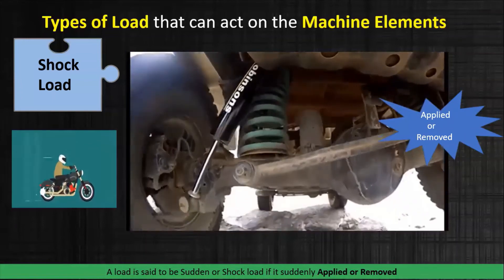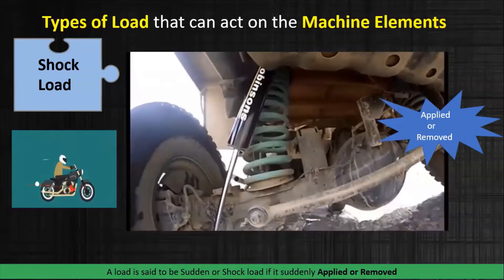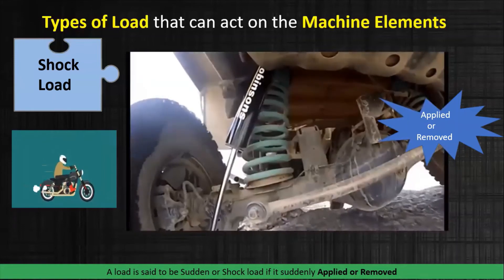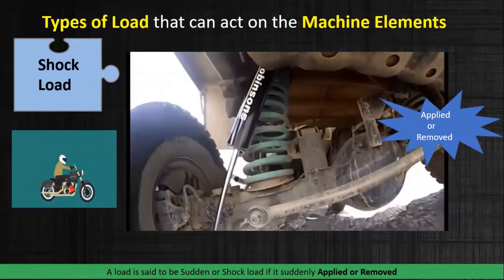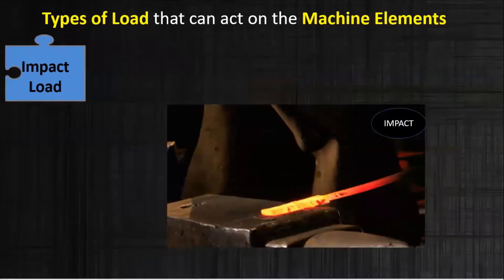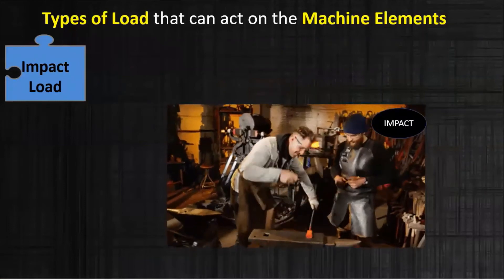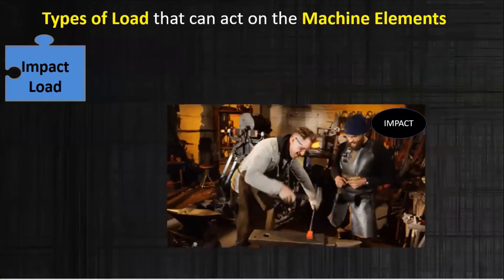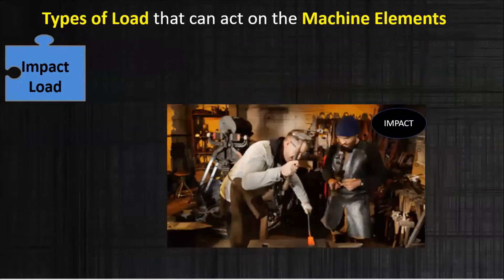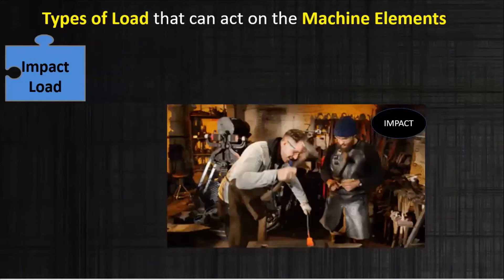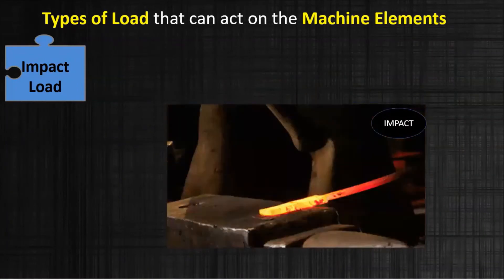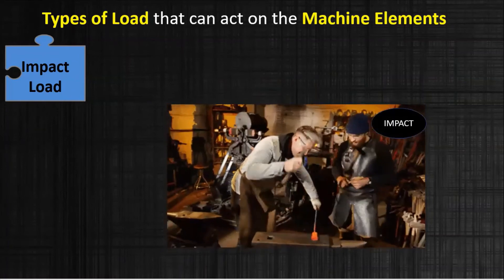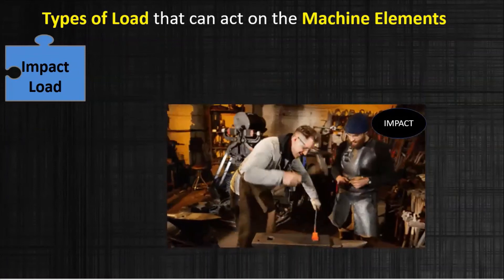A load is said to be a sudden or shock load if it is suddenly applied or removed. Next, the fourth type is the impact load. If you see this video, this is a part of forging — or you can say a blacksmith who is hitting the material, giving a sudden blow over the metal.